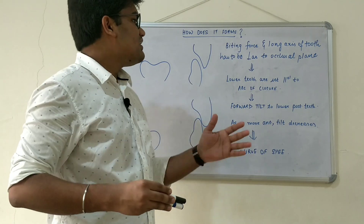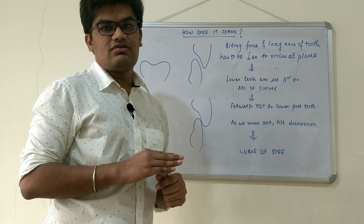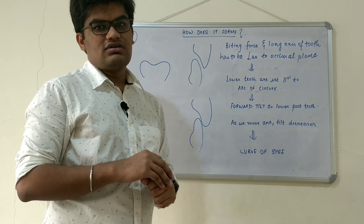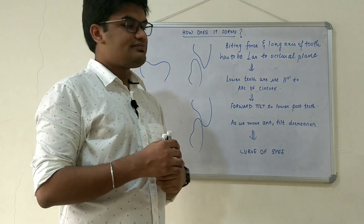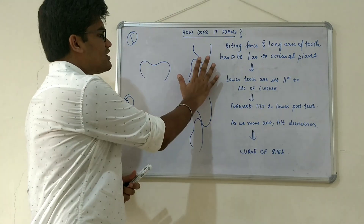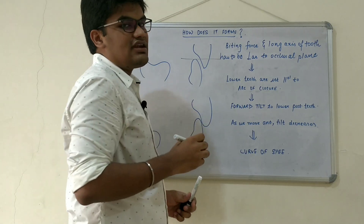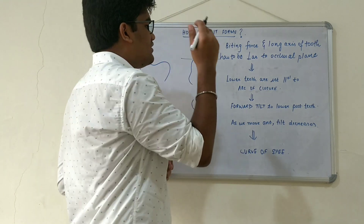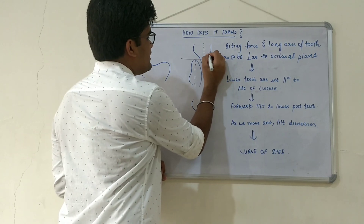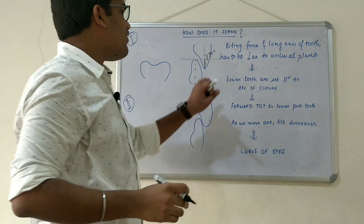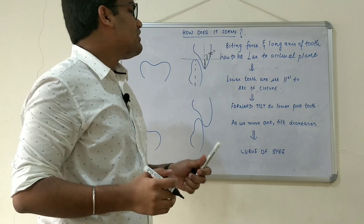Next, let's see how the curve of Spee forms in the dentition. For any process to work harmoniously, the biting force and the long axis of the tooth have to be perpendicular to the occlusal plane, so that the force can travel along the long axis of the tooth. The lower teeth whenever they are set into the oral cavity are always parallel to the arc of closure. Focusing on the anterior teeth first: the biting force and the long axis of the tooth are slightly vertical, and the long axis and occlusal plane form an angle of 90 degrees, meaning forces can easily traverse along the long axis.